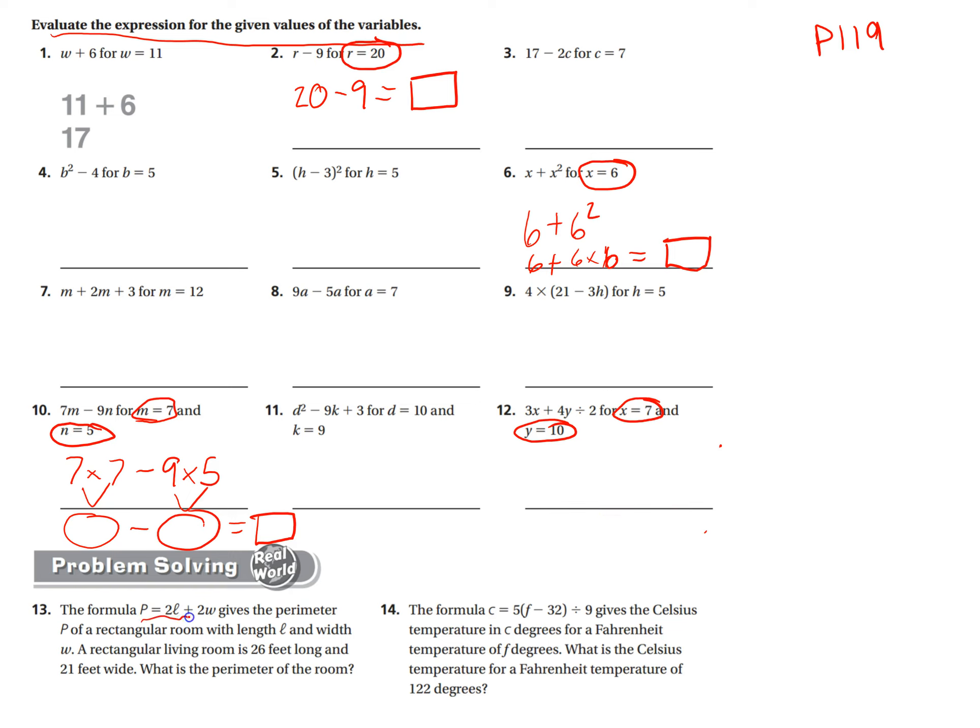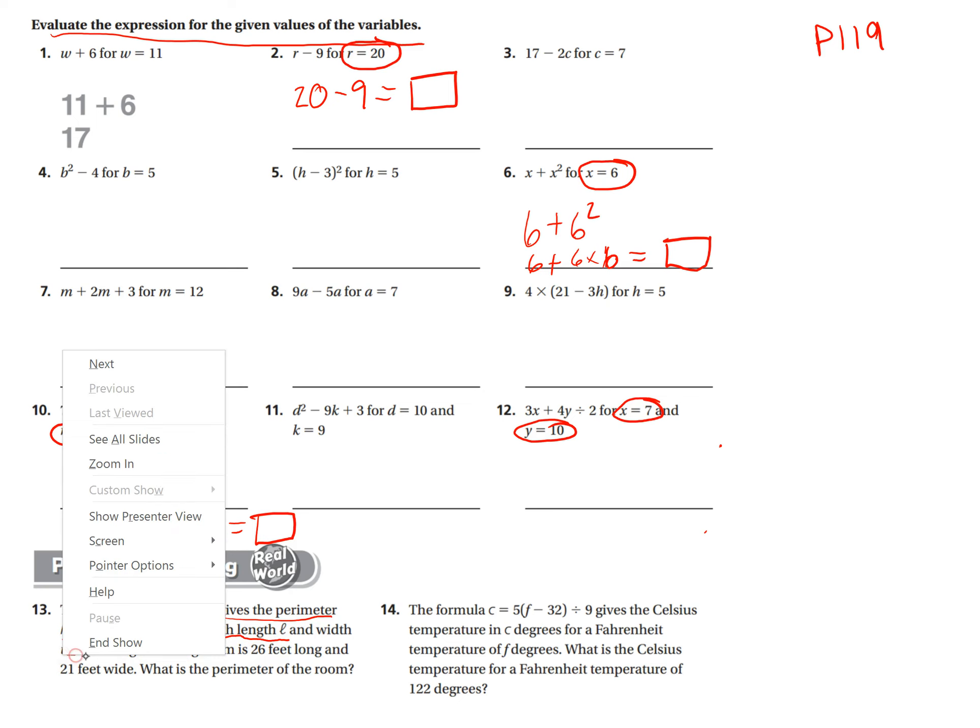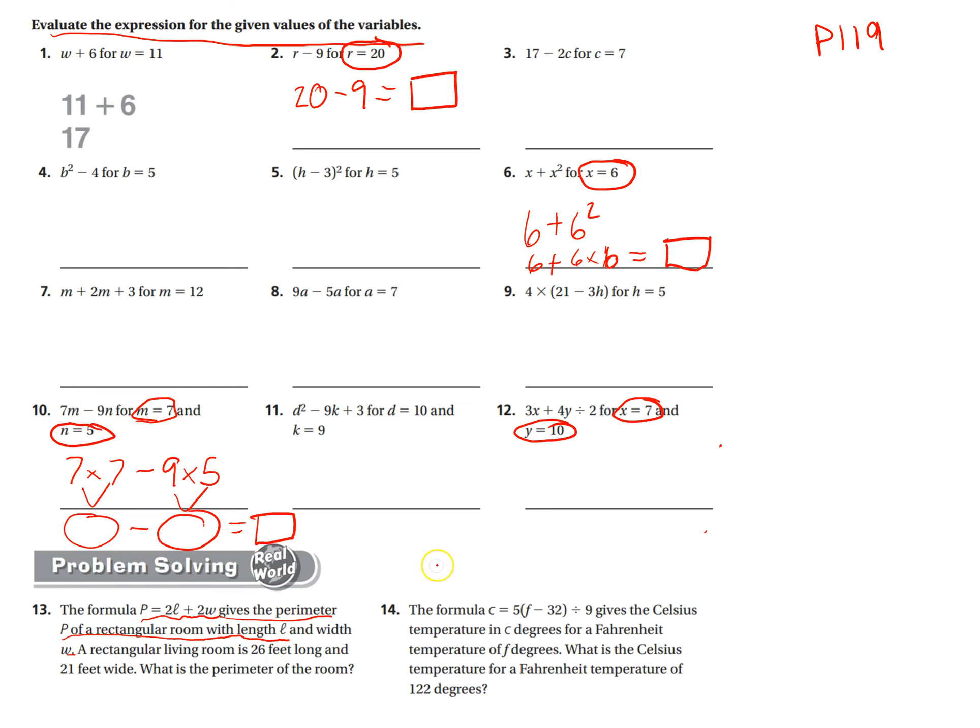Okay. Formula P equals 2L plus 2W gives the perimeter P of a rectangle room with the length W. And the, or excuse me, length L. And the width W. A rectangle living room is 26 feet long and 21 feet wide. What is the perimeter of the room?